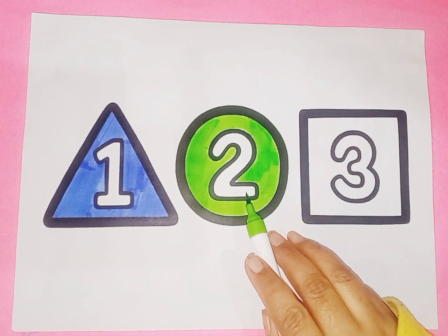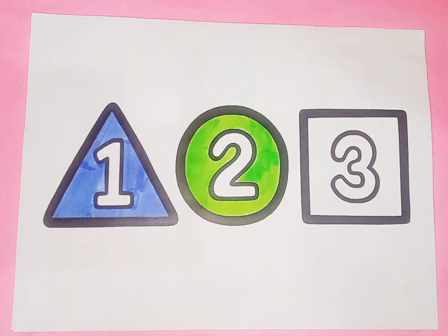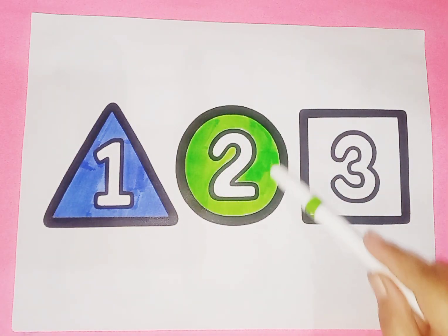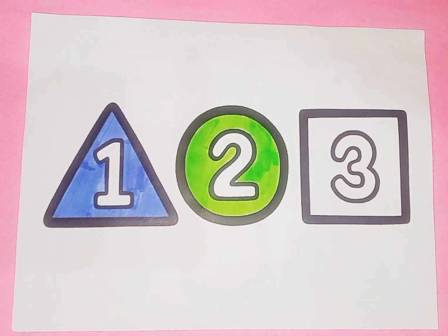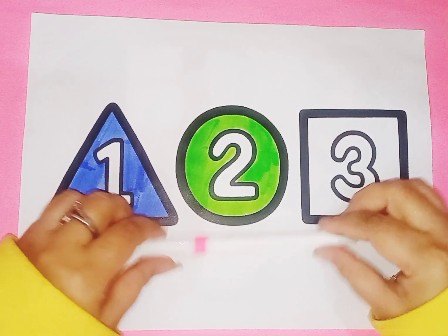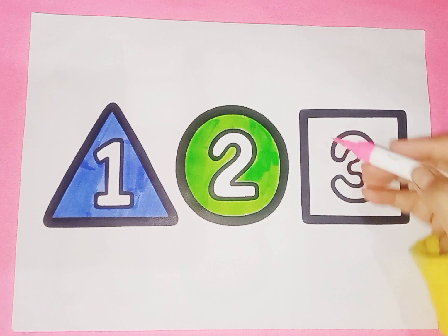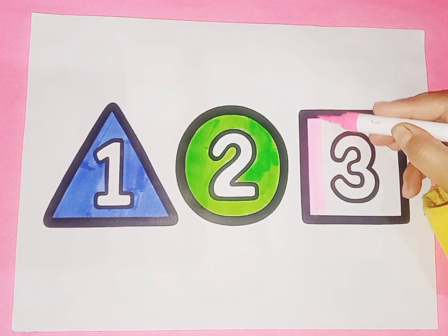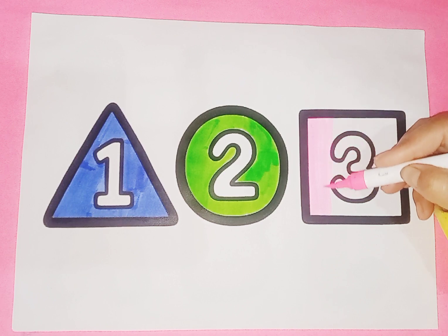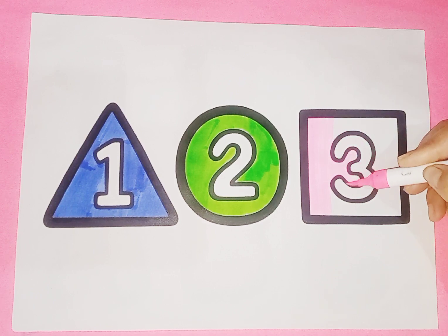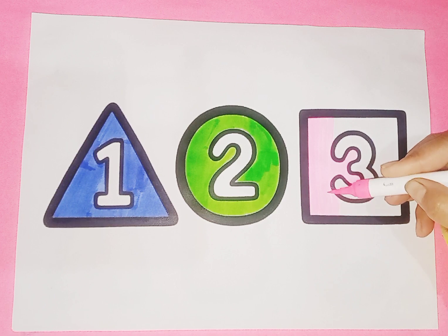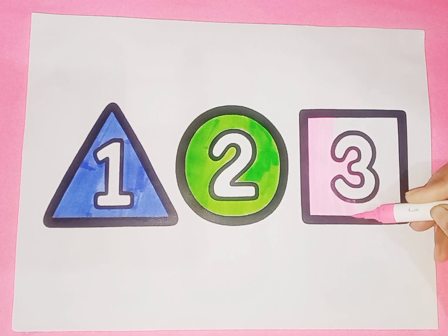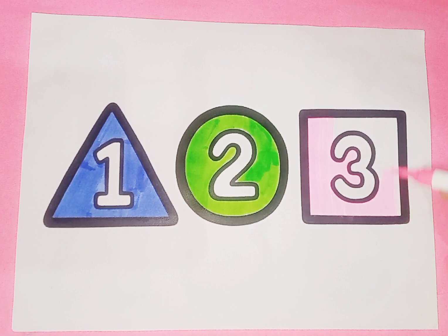This is pink color. Shape is square. This is square. Square has four sides and all sides are equal.